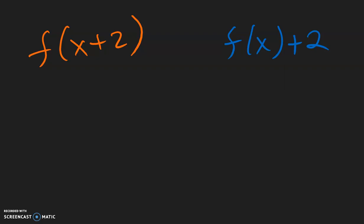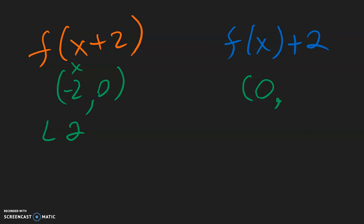Again, we have two examples that look almost the same. For the orange one: inside, we have a positive 2 — change it to negative 2. And outside, we don't have anything, so that's a 0. So it went to the left two units, and the y direction is 0, no change. For the blue one: inside, we don't have anything with the x, so that's 0. Outside, we have a positive 2 — outside does not change — so y is positive 2, which means it goes up two units.